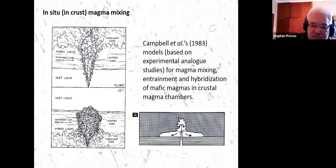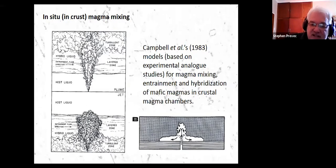So it's less, probably less dramatic a contrast between the crystal pile at the floor and the residual liquid. But the key point here is the turbulent zone in which a hybrid liquid produced by magma mixing is generated. And this produces a new geochemical reservoir for us to play with.